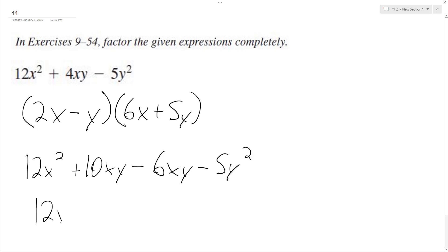So we end up with 12x squared plus 4xy minus 5y squared. And because this matches up with our original expression, that means this factorization here of 2x minus y times 6x plus 5y is correct.